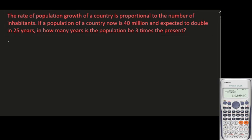Since the rate of population growth is proportional to the number of inhabitants, we use the formula: ln(P) = kt + ln(c). P stands for the population. For the derivation of this formula, there is a separate video — just click on the 'i' at the upper part of the screen.